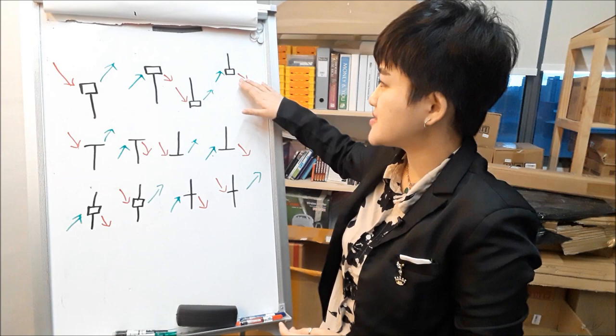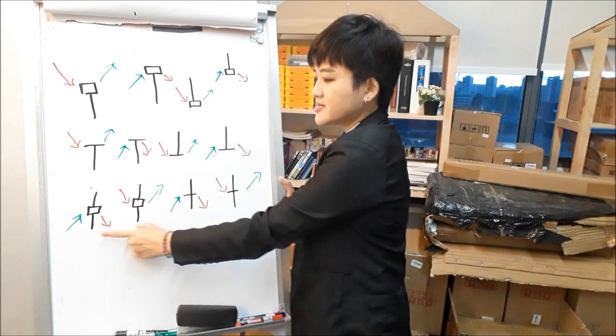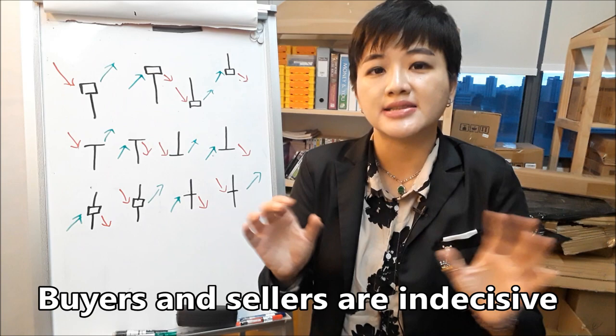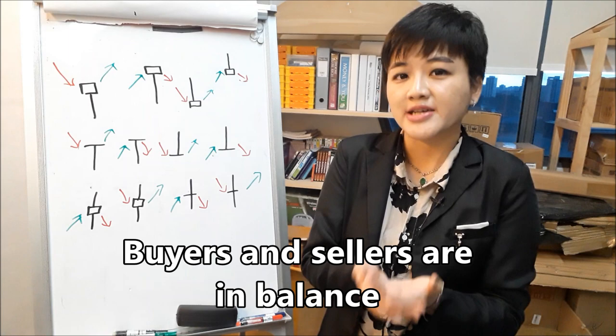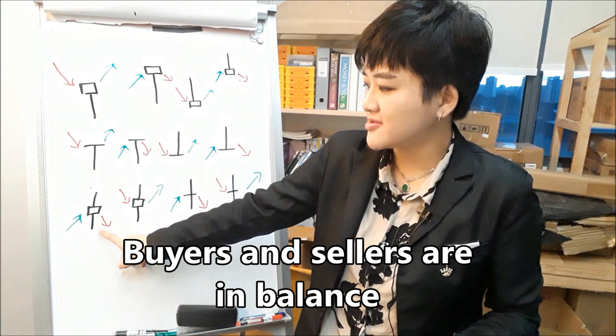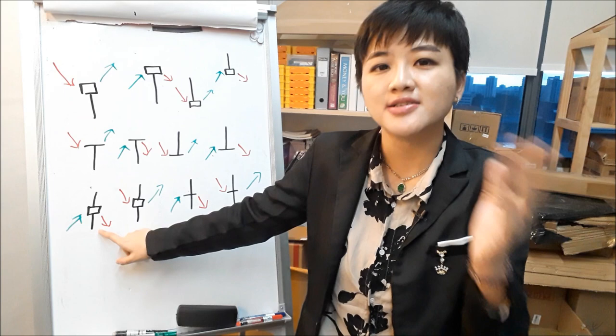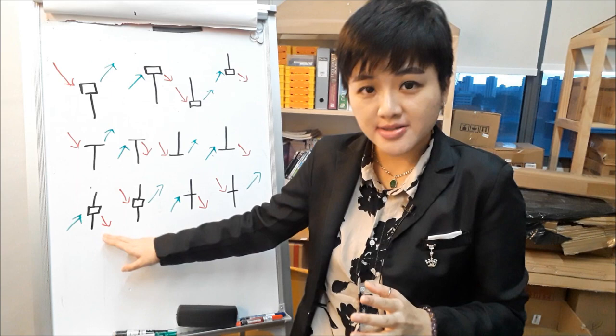Same thing for all of these patterns. You need an additional confirmation because a lot of these patterns, especially the ones down here, just show you that buyers and sellers are indecisive. It doesn't tell you that we are going to U-turn when you see this pattern. It just tells you that buyers and sellers are imbalanced — they don't know where they want to go, they don't know what they want to do.